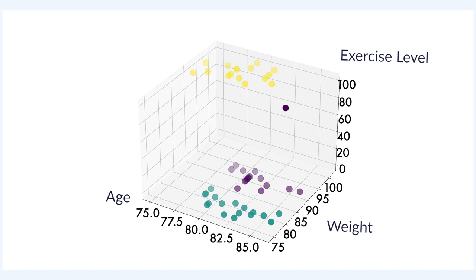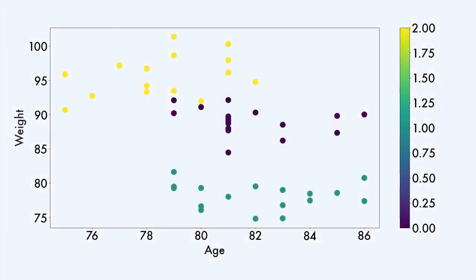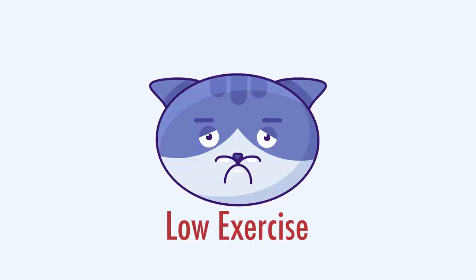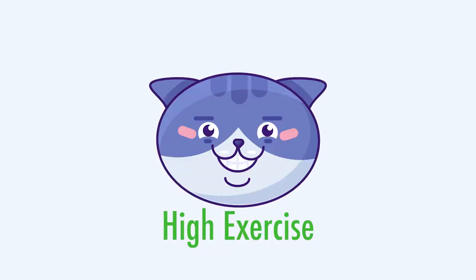In this setting, the synthetic set of people will be characterized by three features: age, weight, and the level of weekly exercise — either low or high. Imagine that all these 50 observations are men that work out at a local gym, all above 75 years old and some of them overweight.